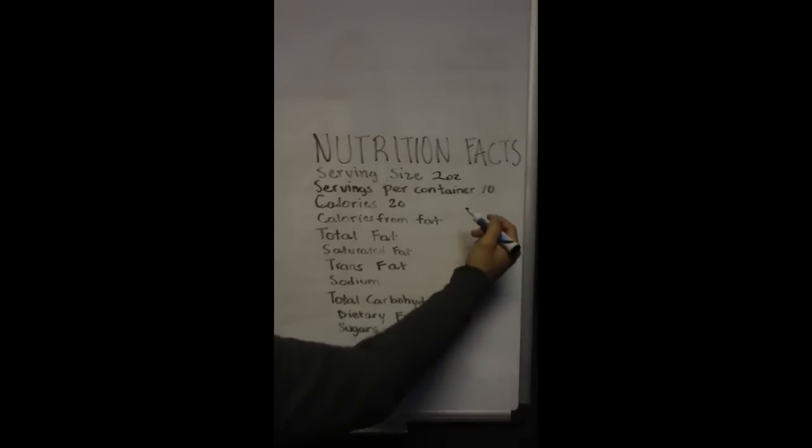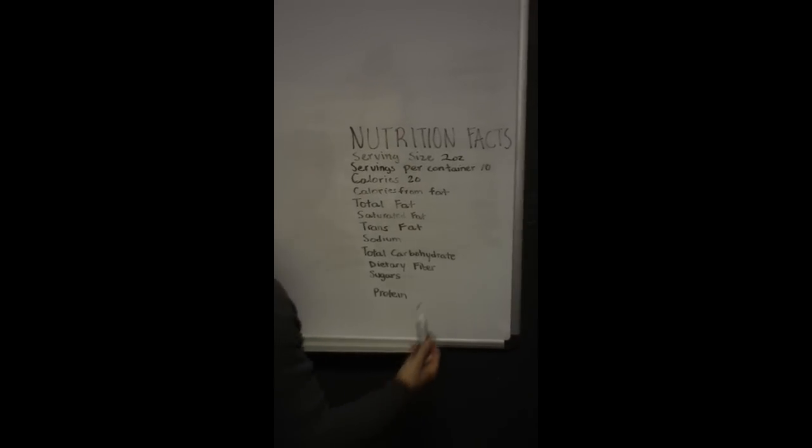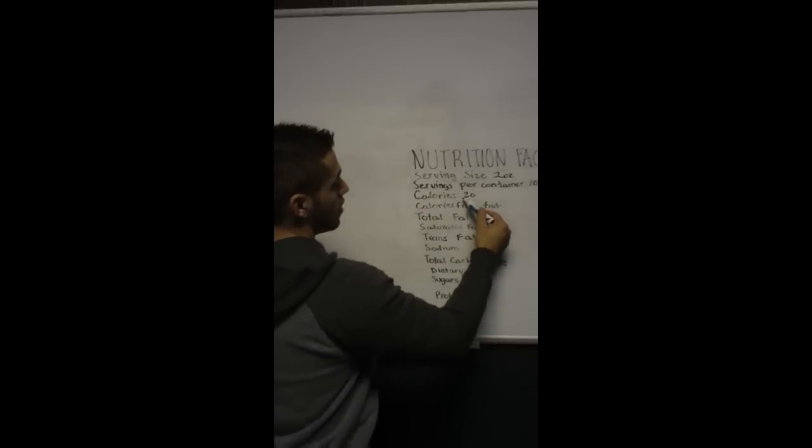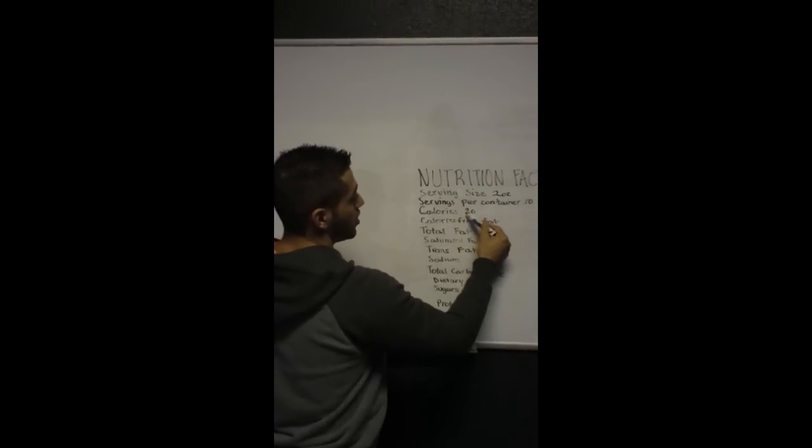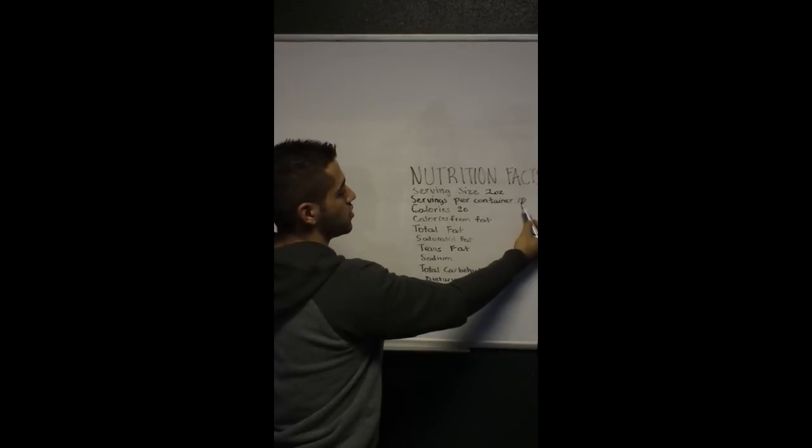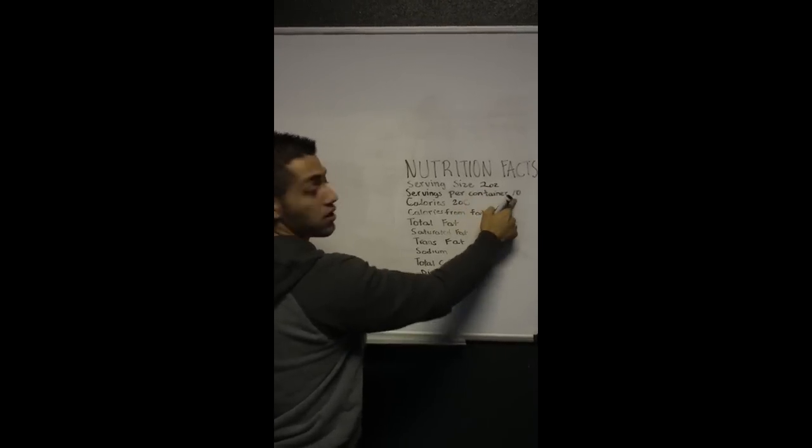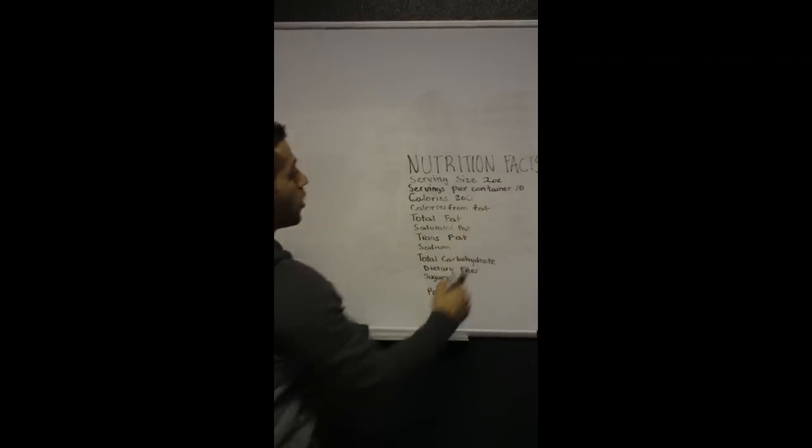So when you see this, to really know how many calories total, which is what you want to know, what you need to do is you need to multiply the amount of calories in that serving by the amount of servings. So really it's not 20 calories in this food, it's going to be 200. So that's number one.